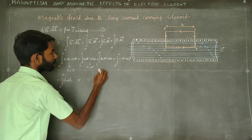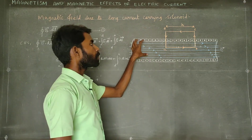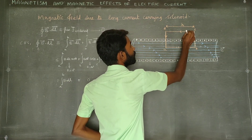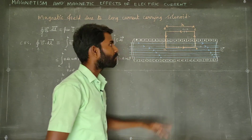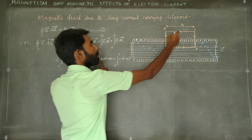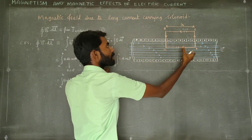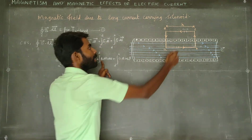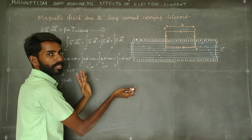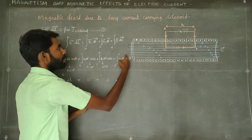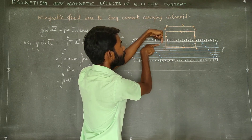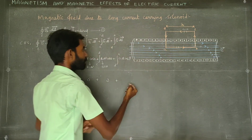So this BC term becomes zero. The solenoid is inside and the magnetic field exists there. Outside the solenoid, for the CD arm, there is no magnetic field — B equals zero. This arm is not placed in the magnetic field. Therefore this term is zero. Similarly for DA: the magnetic field and dL direction are at 90 degrees, so that term is also zero.